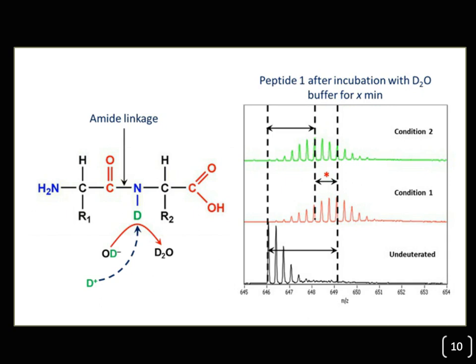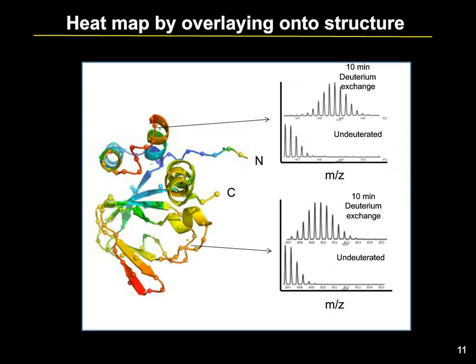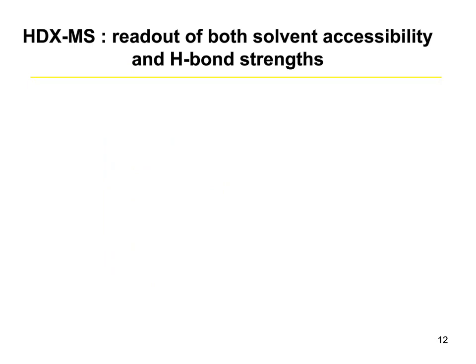This allows for a heat map. If you have a crystal structure, NMR structure, or homology model, the relative exchange that occurs in each part of the protein can be mapped onto the structure. Regions that exchange more readily are shown in red, compared to those that exchange much more slowly and represent the more folded cores of proteins, giving a visual overview of which parts exchange less or more at a given state. HDX-MS offers a readout of both solvent accessibility as well as hydrogen bond strength and propensities, together providing an overview of protein dynamics.